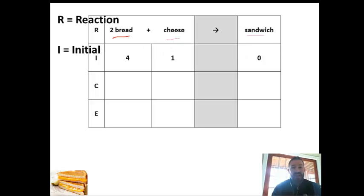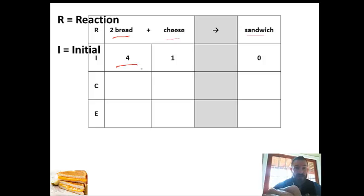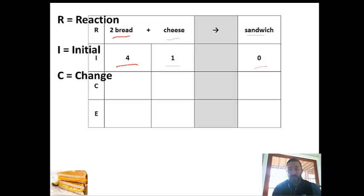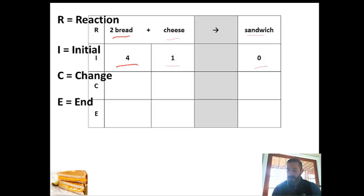I stands for initial — that's the amount that we start with. Normally if we had the perfect ratio, it would be two bread and one cheese, but we're going to start with four pieces of bread and one piece of cheese. At the beginning we haven't put them together, so we have no sandwiches. C stands for change — how much does the amount of bread change, how much does the cheese change, and how many sandwiches are produced. E stands for end — how much do you have of each thing after you make the sandwich?